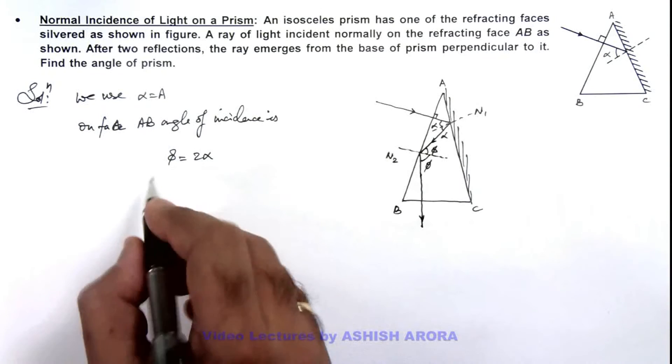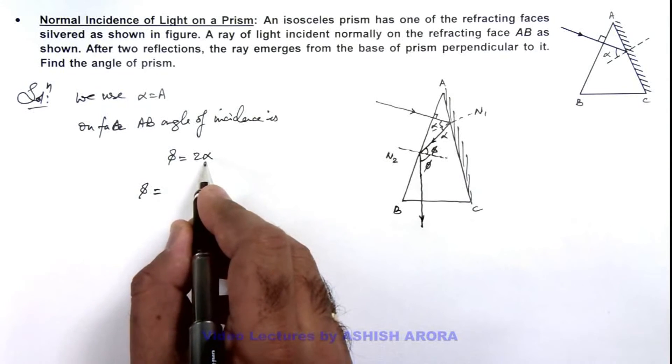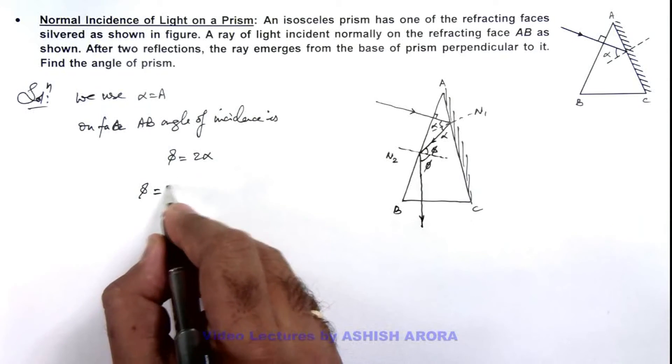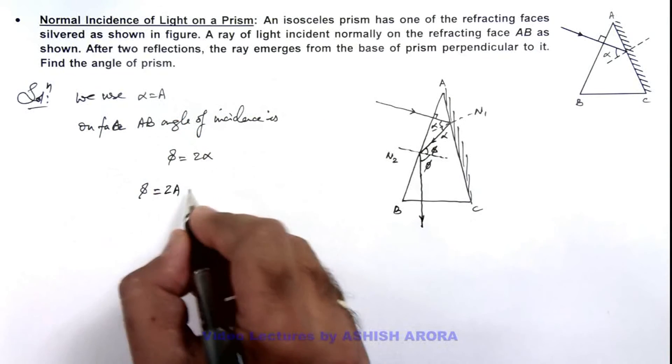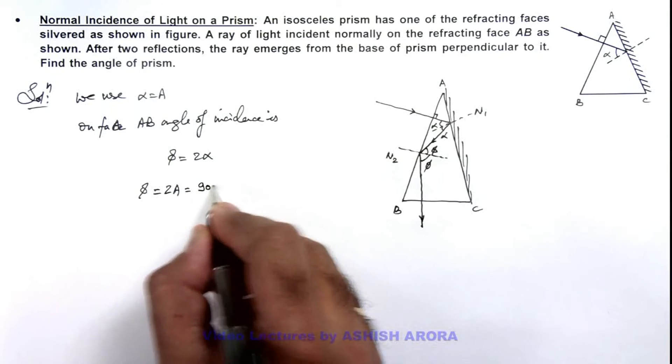So here we can write the value of phi is equal to this 2 alpha. Here, this is 2A because the value of alpha is A, and this can be written as 90 minus A by 2.